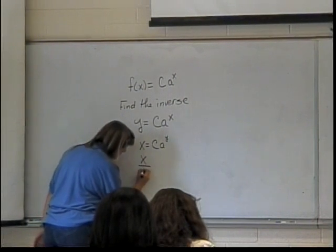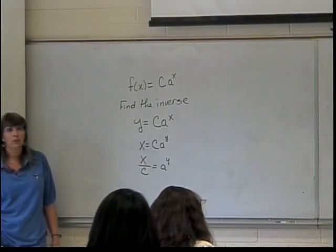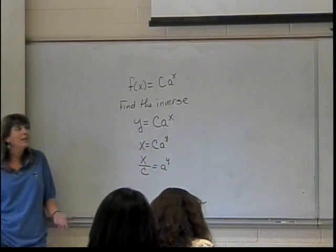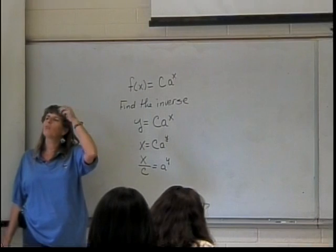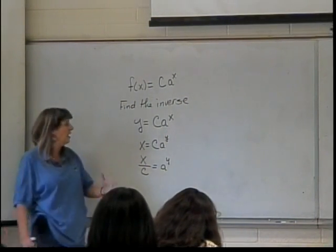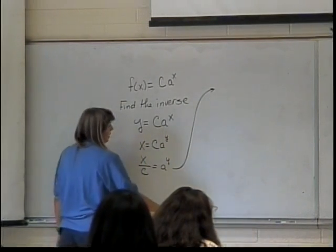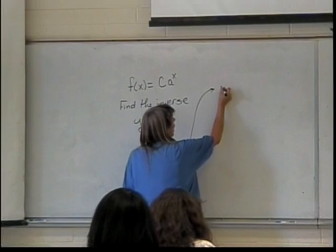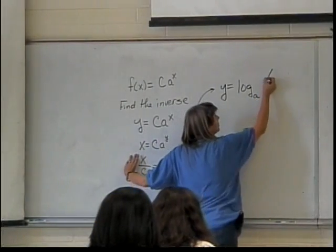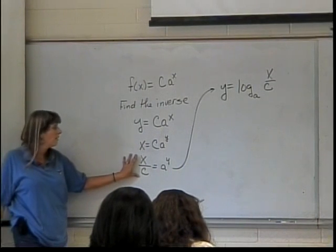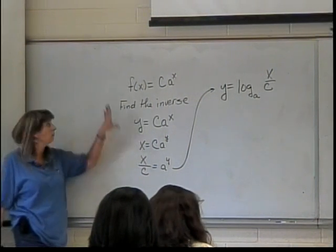I can divide by c: x over c equals a to the y. I need to get to this y — I need something that is y equals. This is where logarithms came in. They were the thing that allowed us to say this exponent is equal to — and so what we have is: y is equal to log base a of x over c. That's where logarithms were first defined, in order to talk about what is the inverse of this original function.